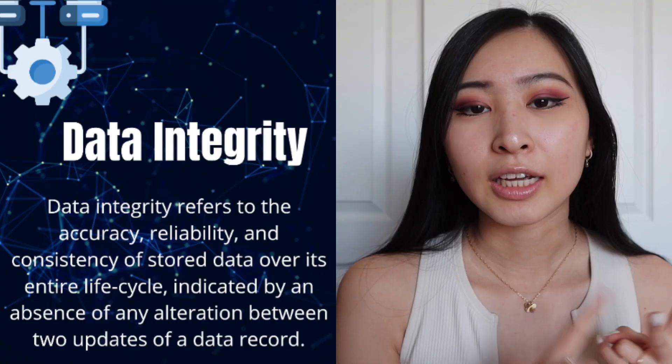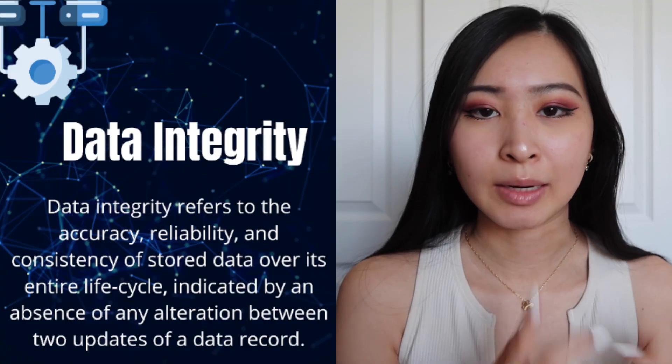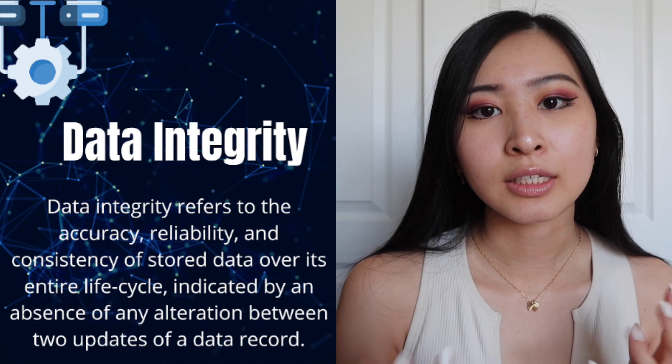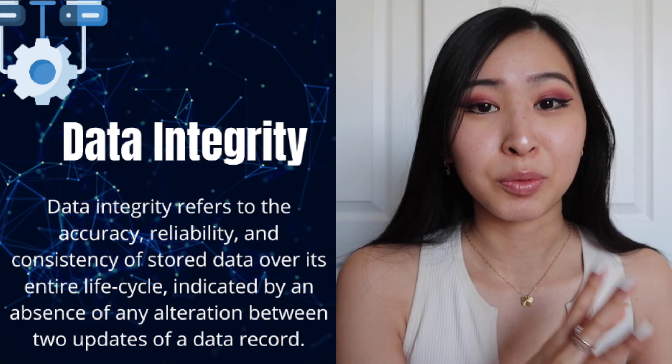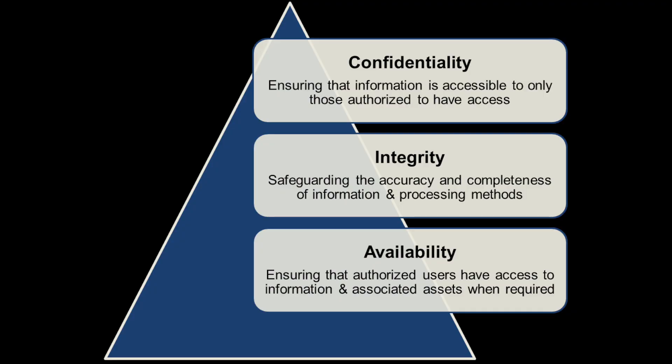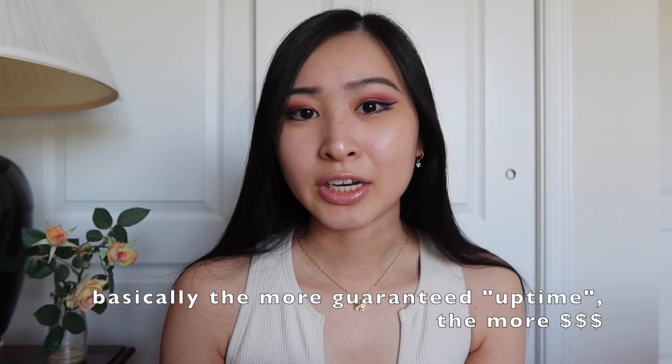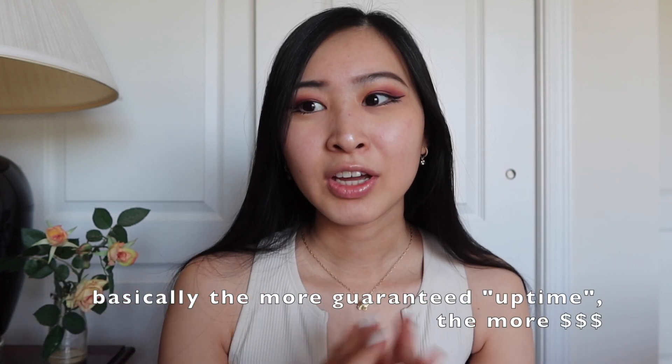Confidentiality is probably the most straightforward — it's just making sure that only the people who need to know certain information have access to it, and that documents or processes people don't need to see aren't available to everybody. Integrity is making sure that data wasn't tampered with or changed without going through proper processes, or that only the right people can change, update, or delete that data.